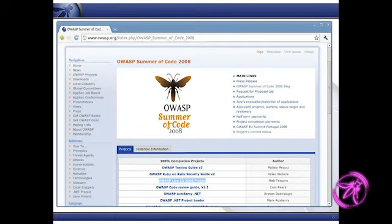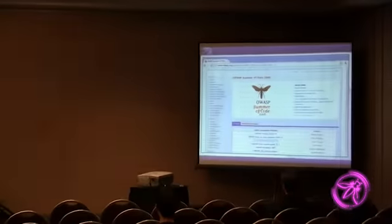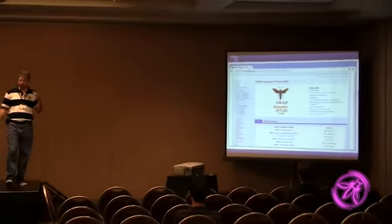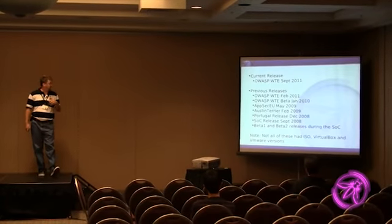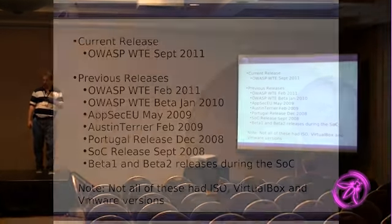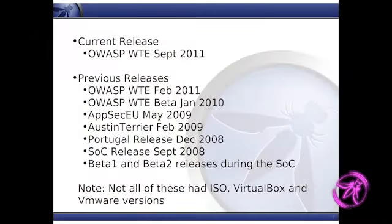It was strictly an ISO image that you could boot — that was it — with around 10 to 15 tools. Since then I've had a few more releases: 2.1 in '08, 2.1 in '09, one in '10, and now version 2 this year.